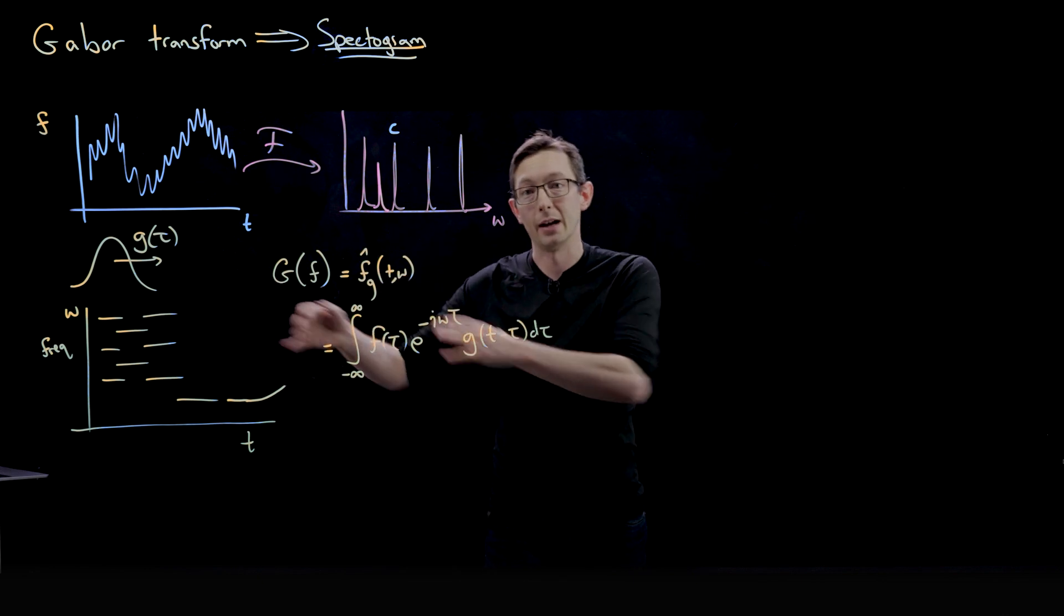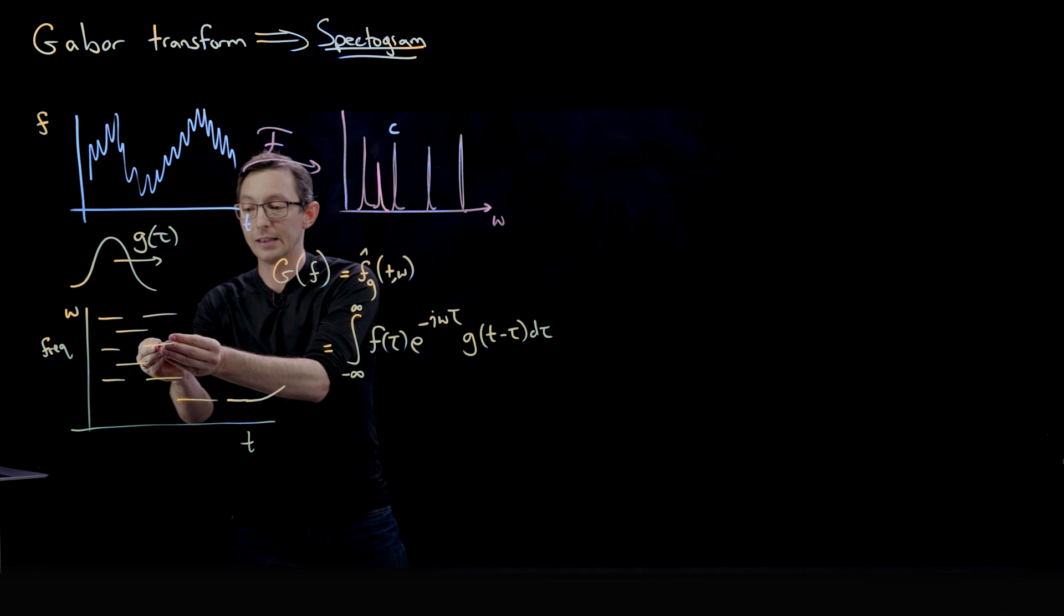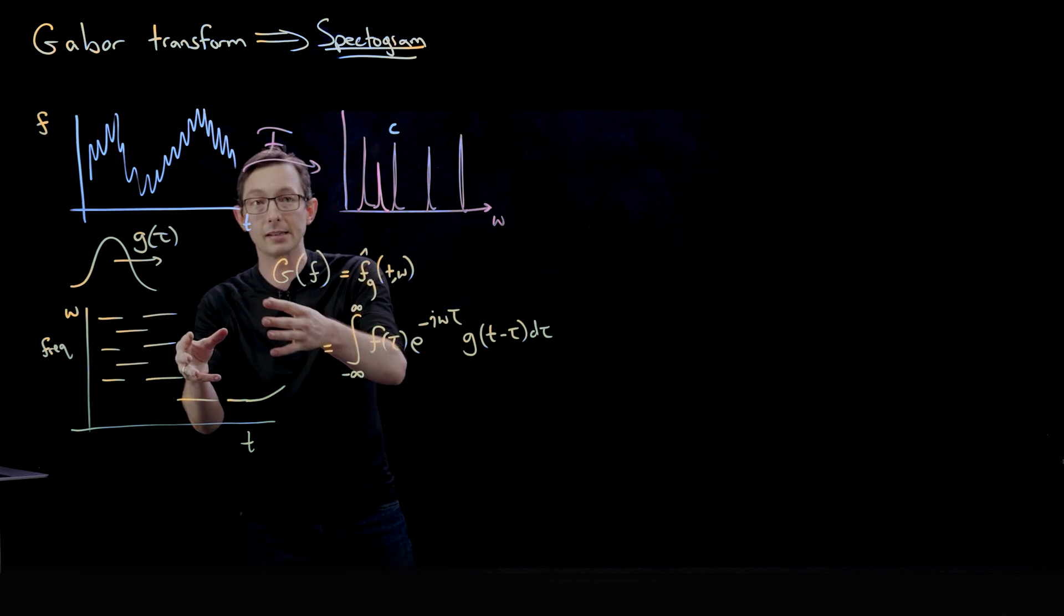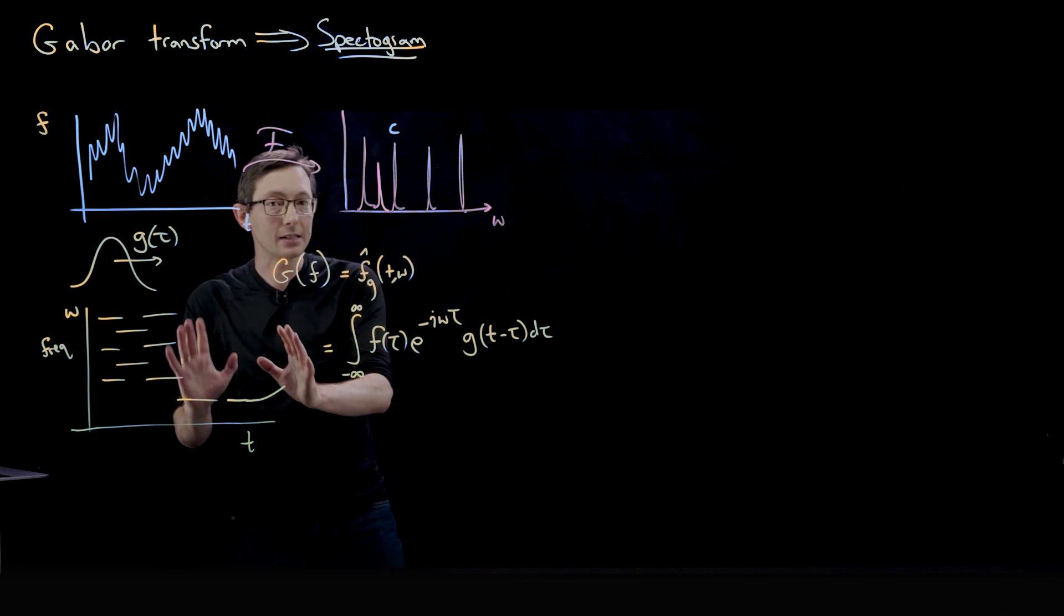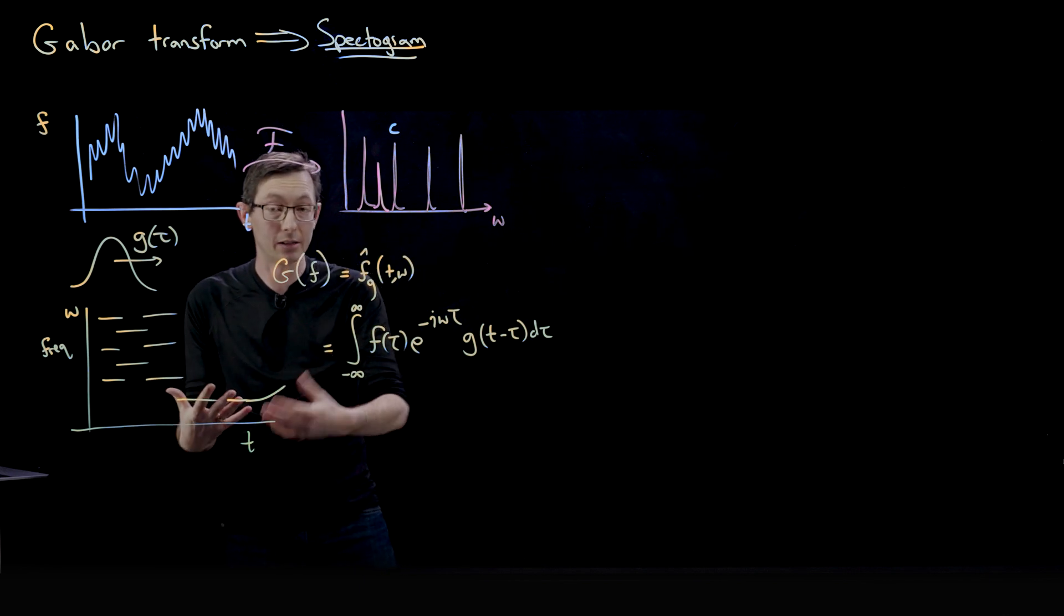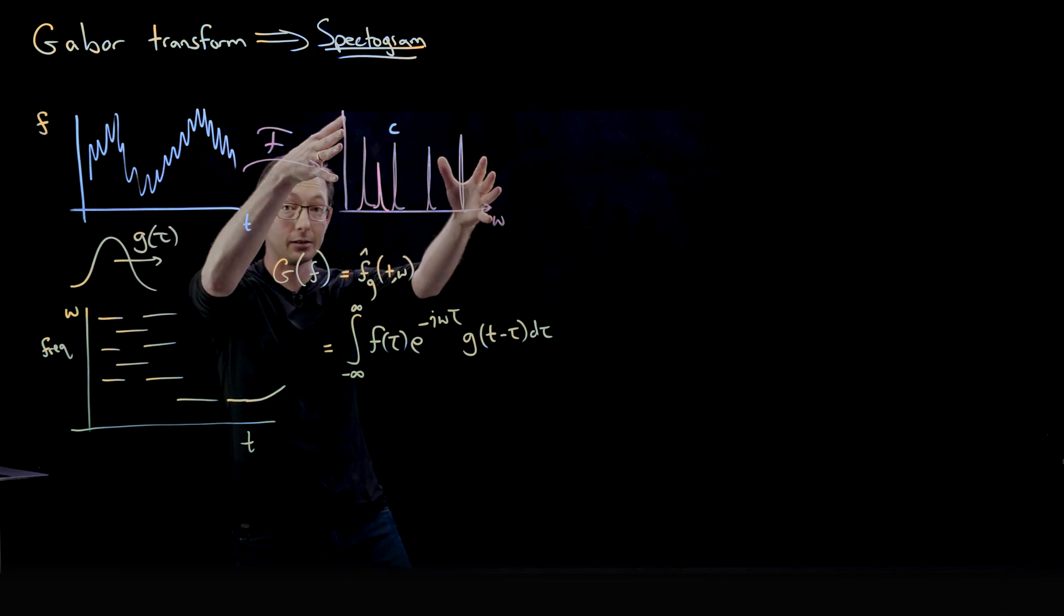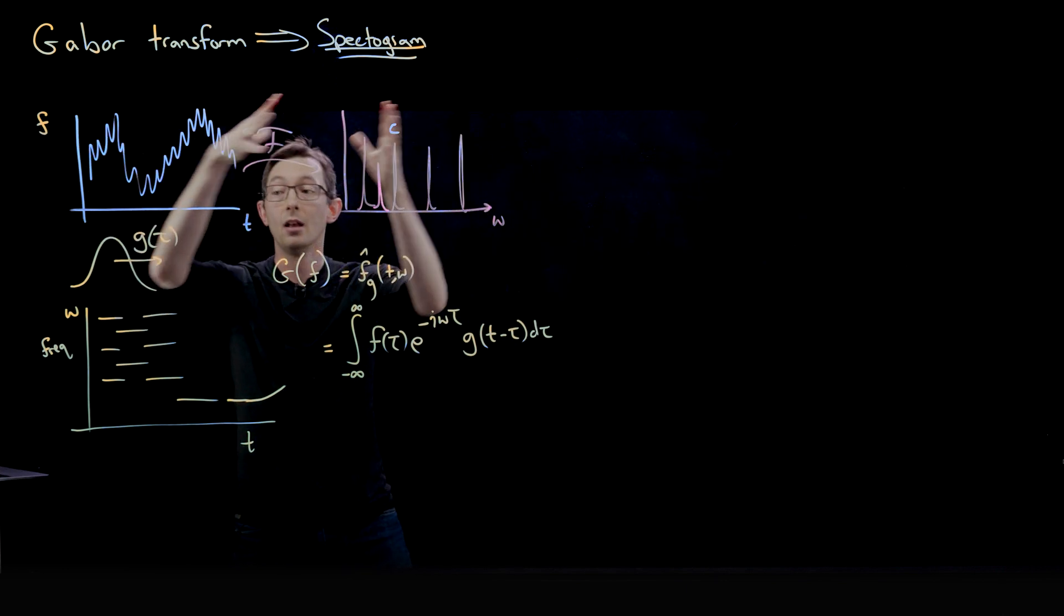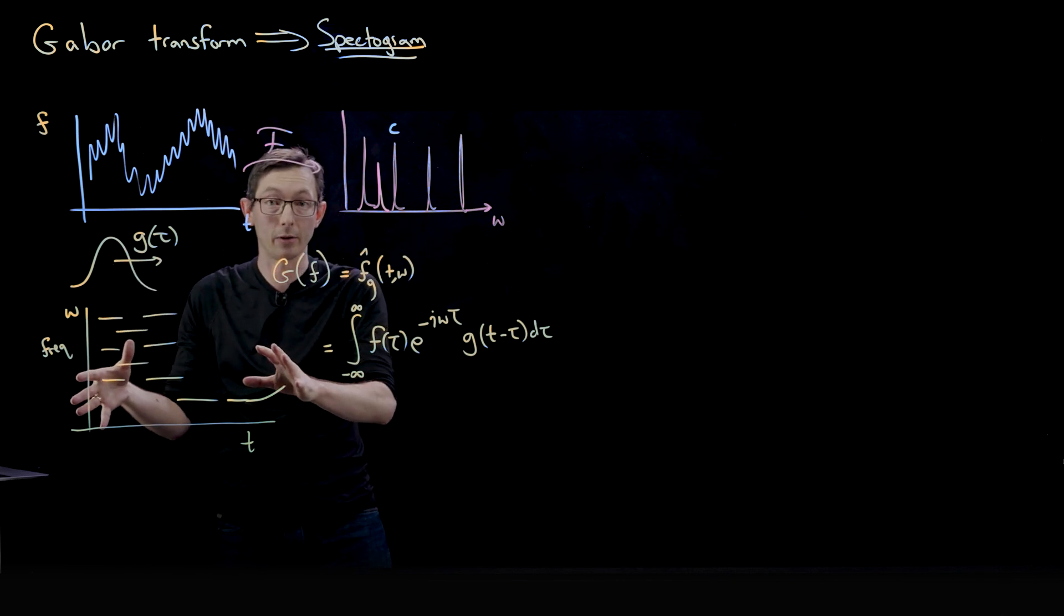It usually shows itself as some kind of evolving frequency signature in time in the spectrogram. So oftentimes when you want to classify audio signals, you want to take your signal and not just transform to the Fourier series, or the Fourier domain, you want to transform to this spectrogram domain, this Gabor transform.